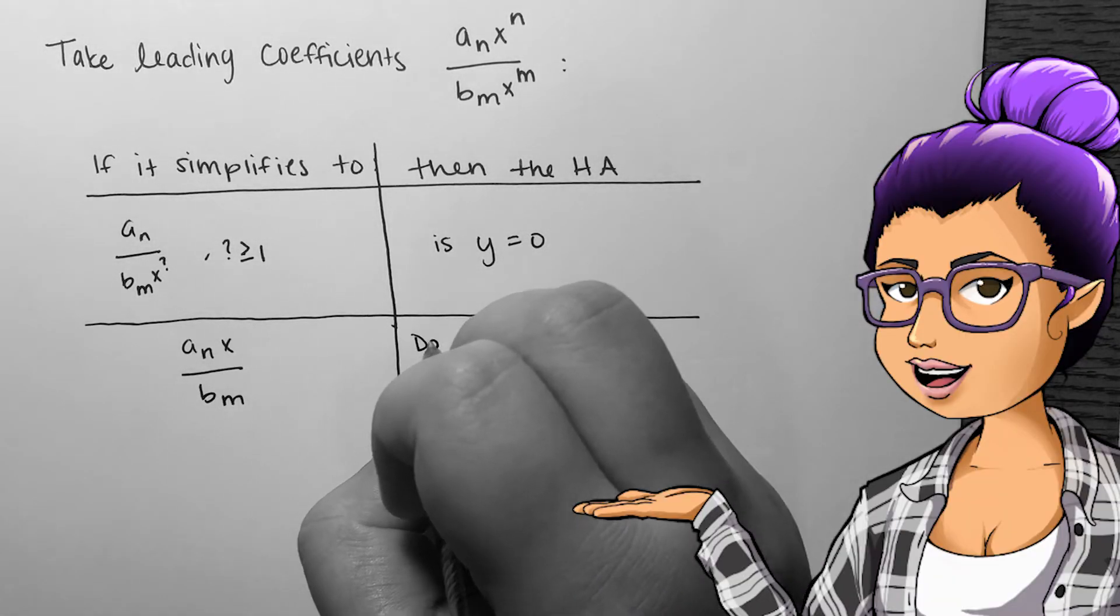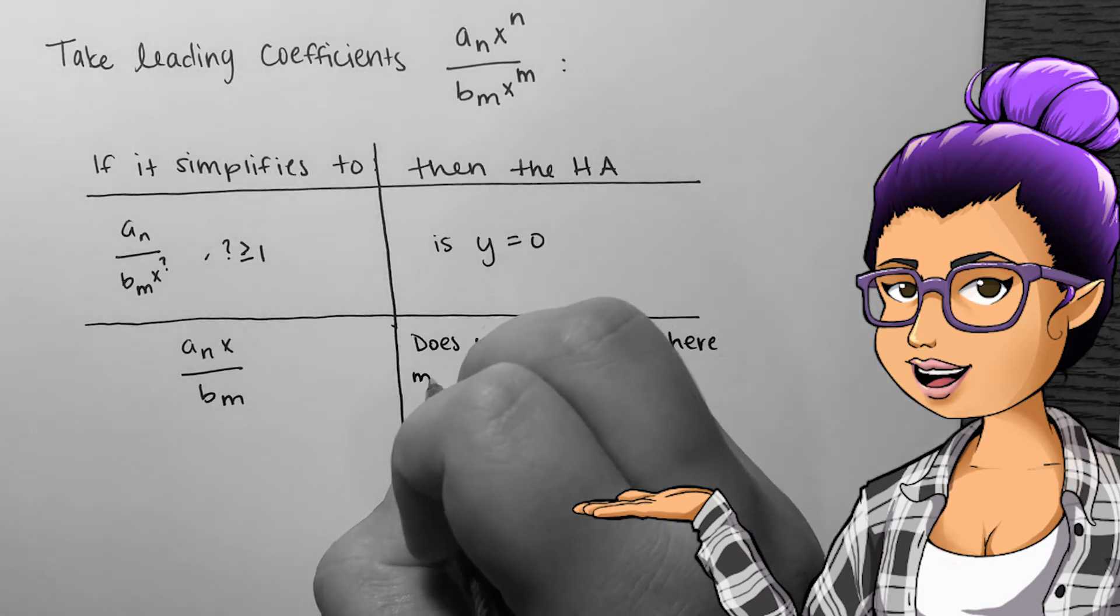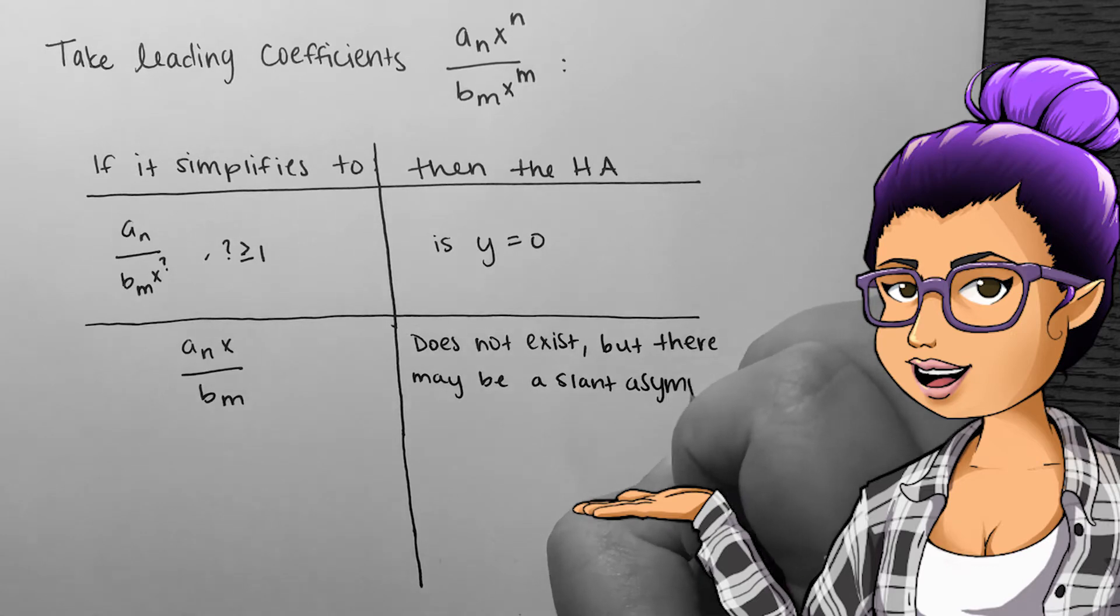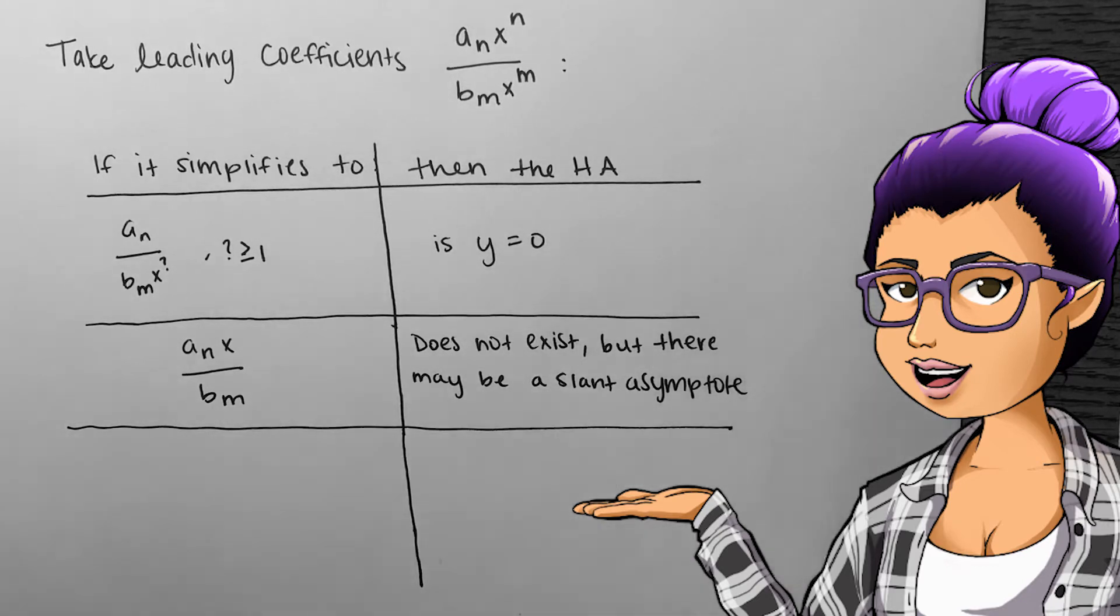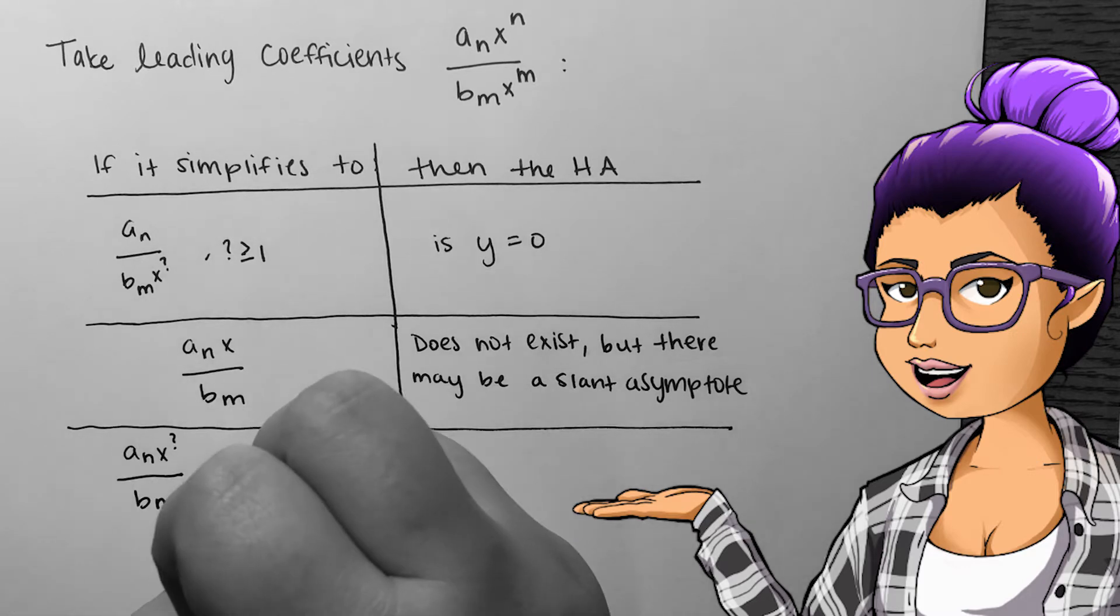If the two leading terms are divided and simplified, giving us something that resembles a polynomial, no longer a rational, then there is no horizontal asymptote. If this simplified polynomial has degree of one, then there may be a slant asymptote, which we won't focus on.